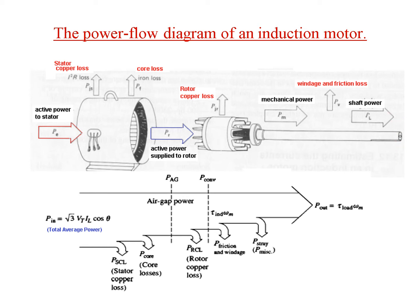Now we will relate this with the power flow diagram. The input power, or total average power, is given by √3 × V_terminal × I_line × cos θ. This is the power that we are supplying. Then we have to account for two losses: the stator copper loss and the core iron loss.